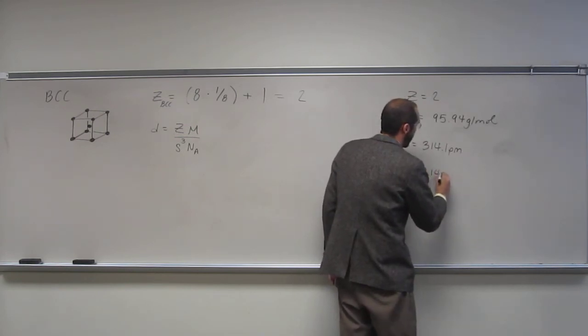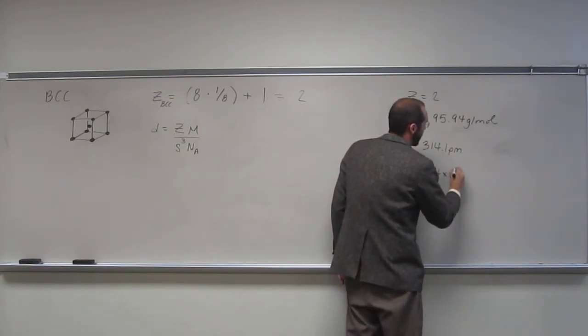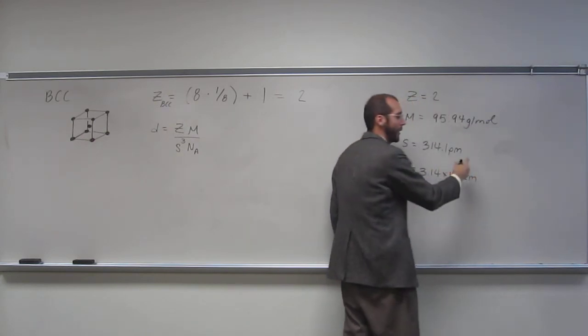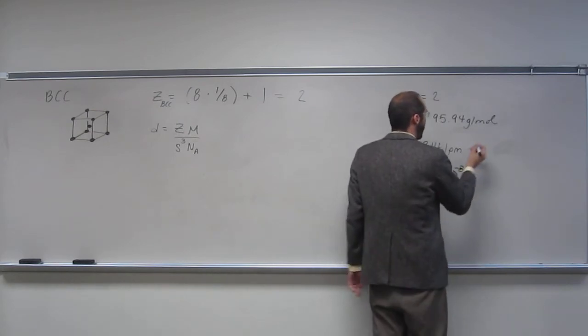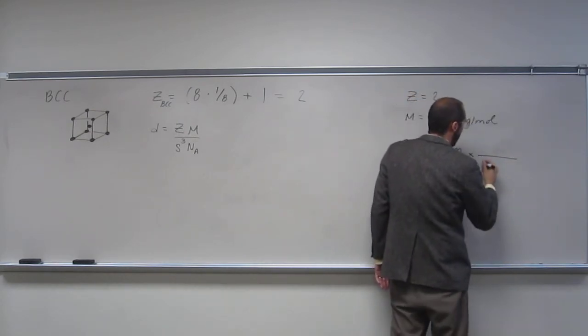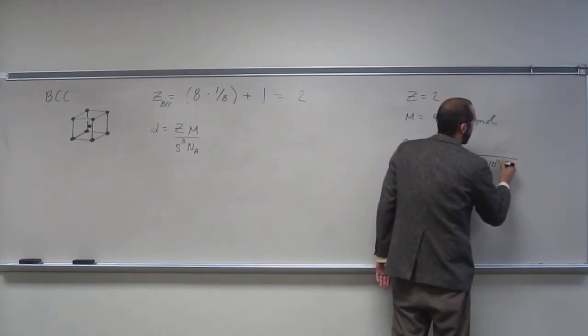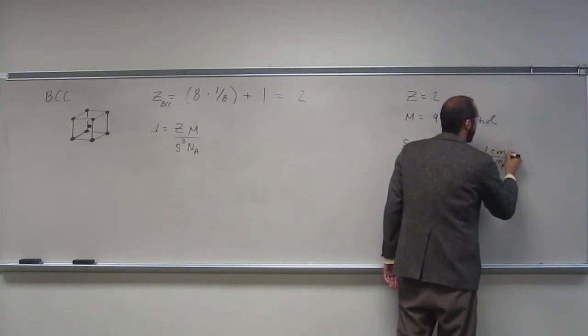3.141 times 10 to the negative 8, so it's a good one to remember because you're going to have to do this calculation a lot. Now, how did I do that? It was 1 times 10 to the 10 picometers per one centimeter.